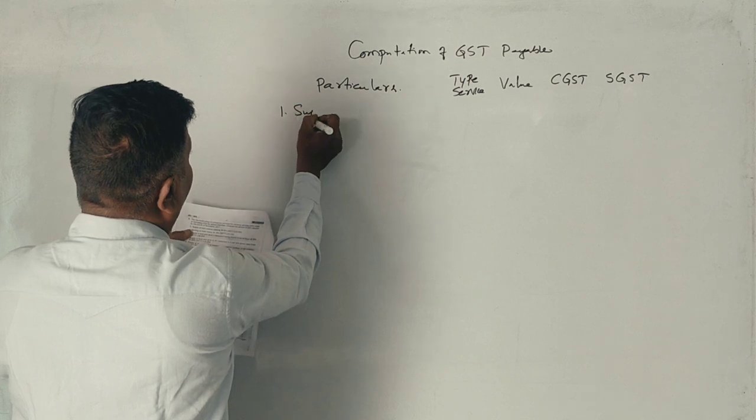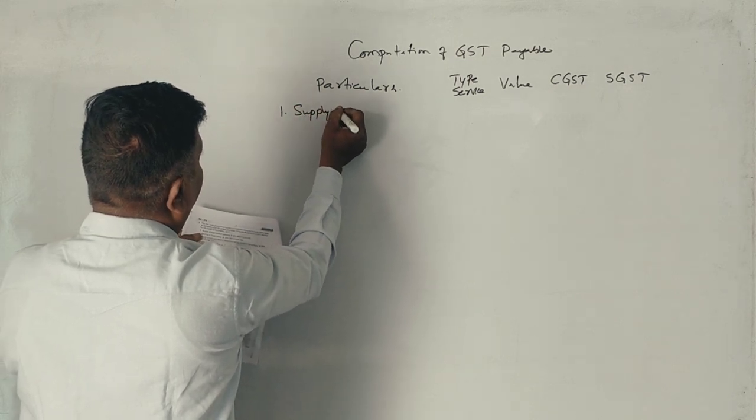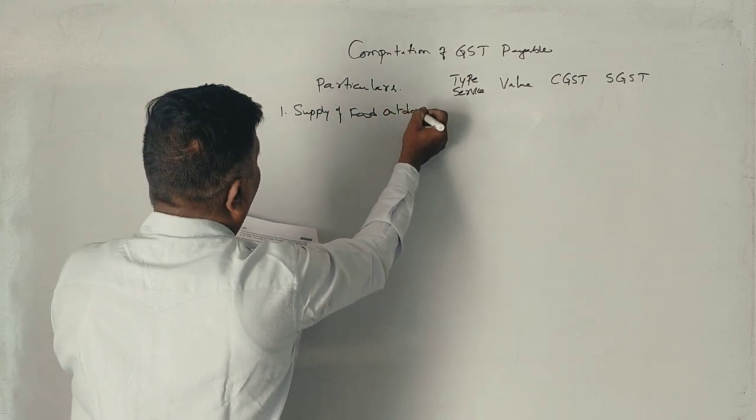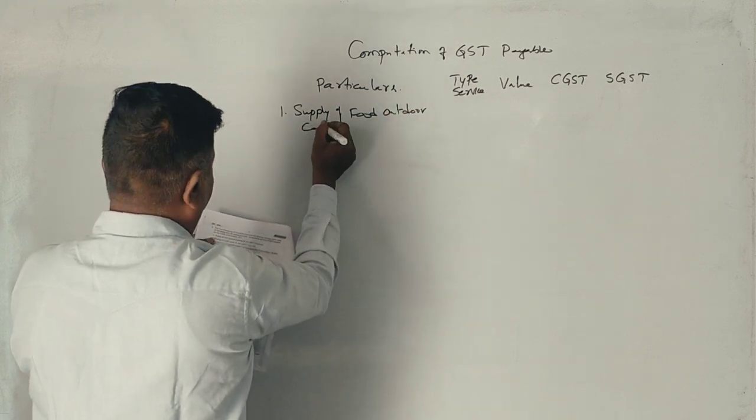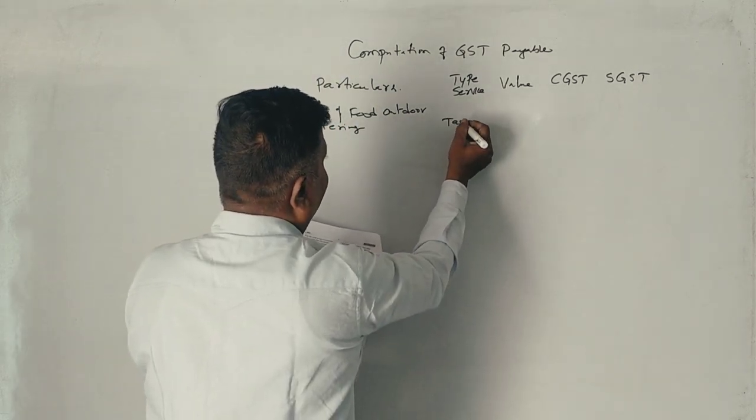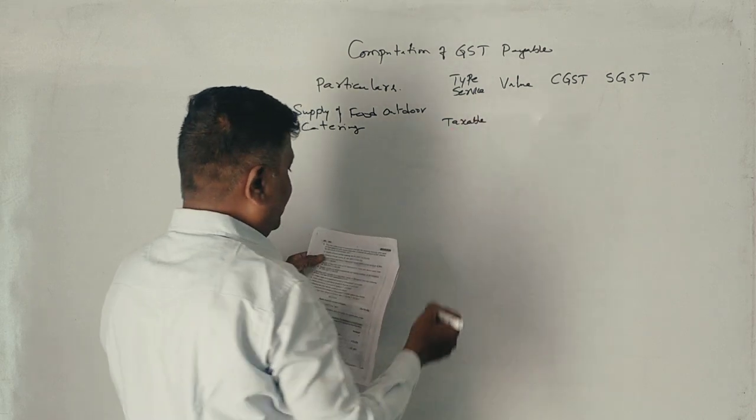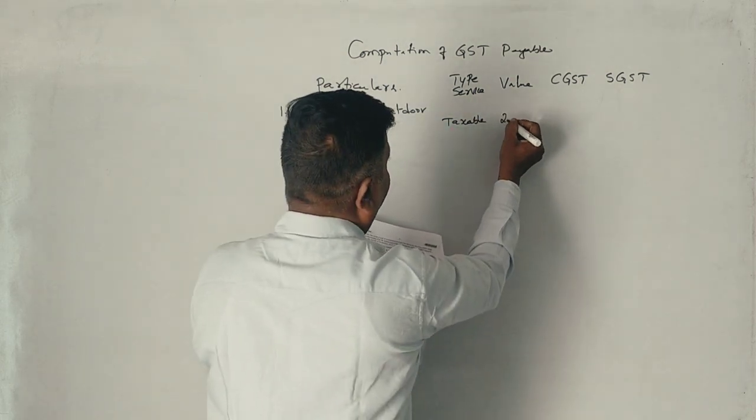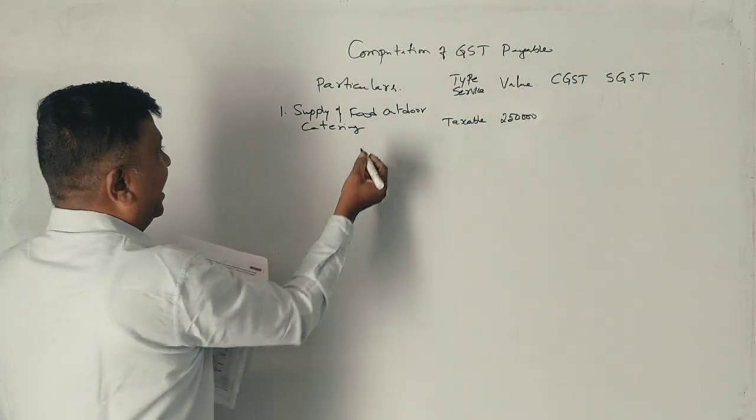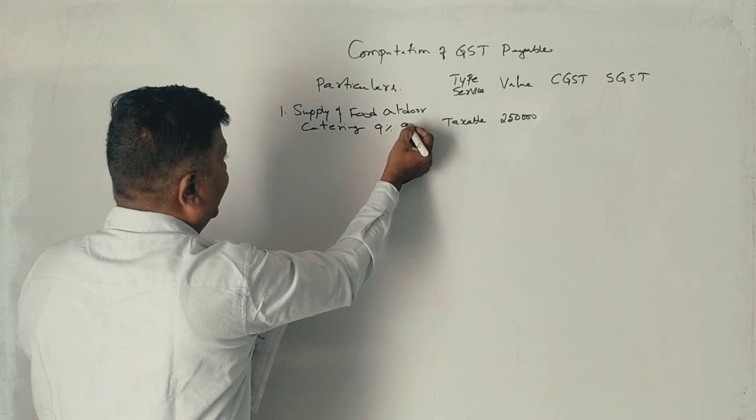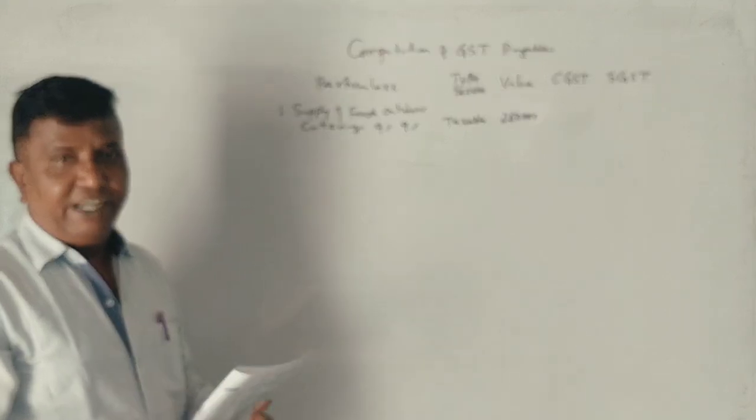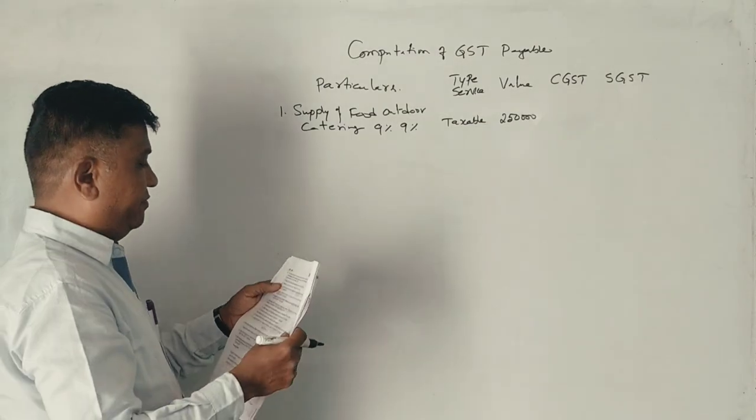Supply of food, outdoor catering. It is a taxable service. What is the value? 2,50,000 rupees. What is the GST? 18%. 18% means 9% to CGST, 9% to SGST. Next, second point.